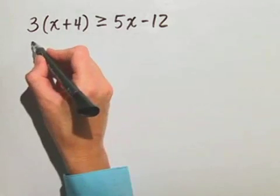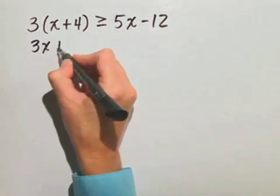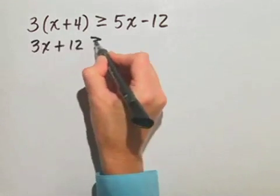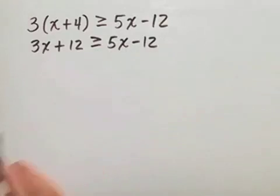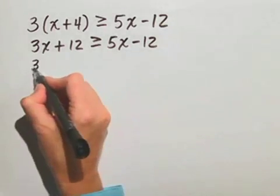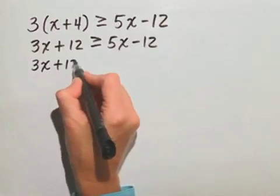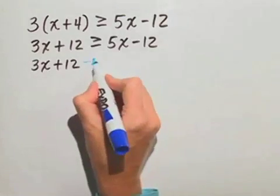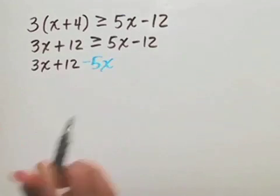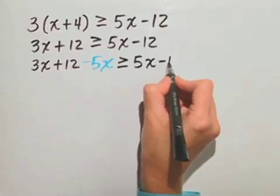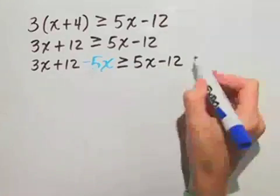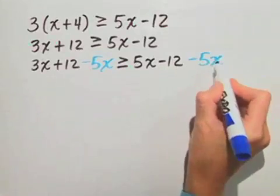So we first distribute, and we have 3x plus 12 is greater than or equal to 5x minus 12. Let's move the variable terms to the left, and we have 3x plus 12. We'll subtract 5x from both sides of this inequality, is greater than or equal to 5x minus 12 minus 5x.